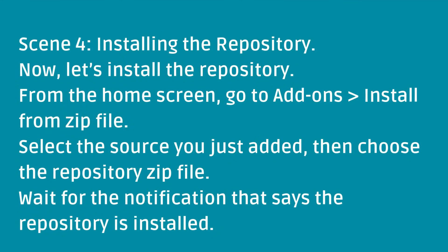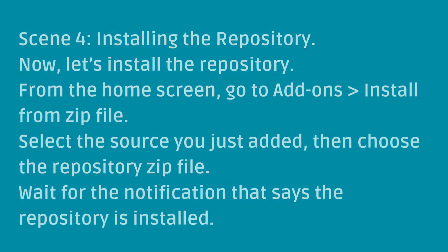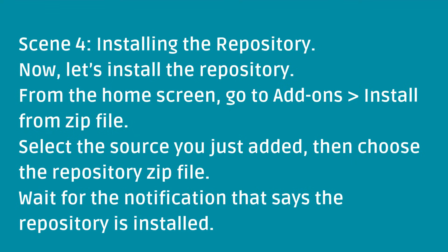Now let's install the repository. From the home screen go to Add-ons > Install from Zip File. Select the source you just added, then choose the repository zip file. Wait for the notification that says the repository is installed.